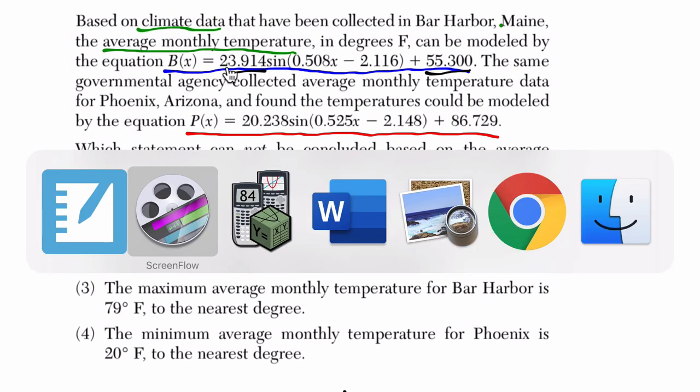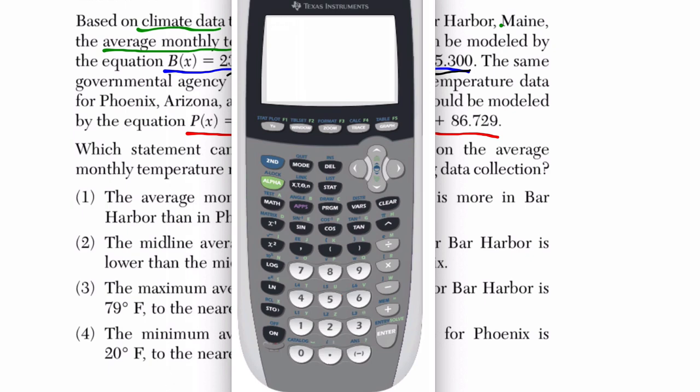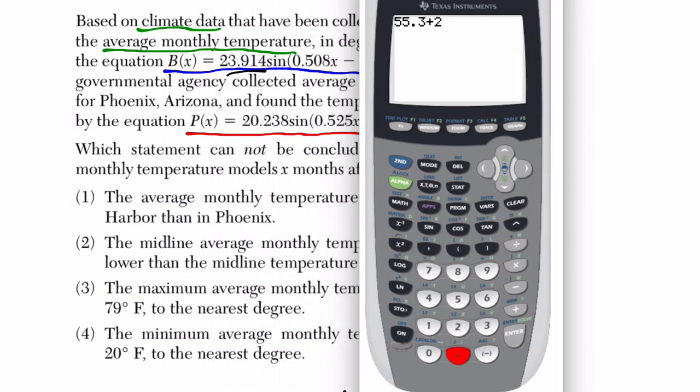And there are other ways to set this up, but this is the way I prefer. So 55.3 plus 23.9. Okay, that's our peak. And then 55.3 minus 23.9, that's our valley.